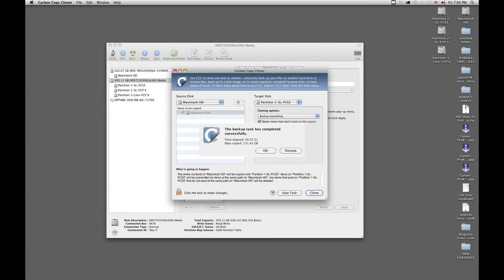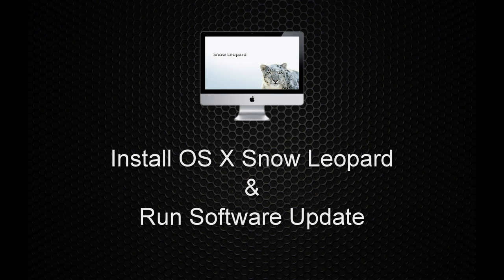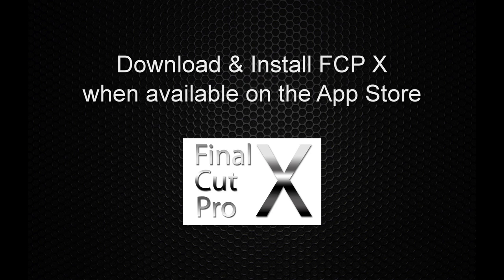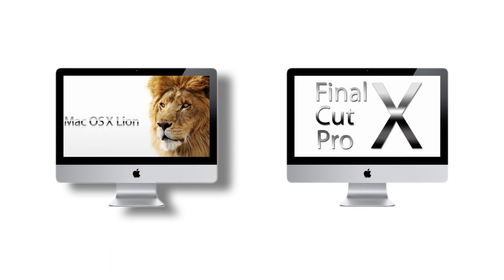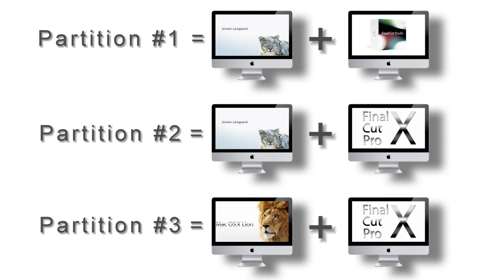It's just about an hour later and the clone of my working system drive to partition one is complete. The next step will be to install OS X Snow Leopard to partition two, then use Apple Software Update to update to the latest version of Snow Leopard, and then I'll be ready to download and install Final Cut Pro 10 as soon as it's available. Later, once Lion is available from the Apple Store, I'll install that to partition three, and then Final Cut Pro 10 there as well — completing the process. At that point I'll be ready to run any version of Final Cut under the old or newer operating system whenever I choose. If you follow these instructions, you'll be able to do exactly the same on your editing system. This is David Rothweiss wishing you good luck and good editing.